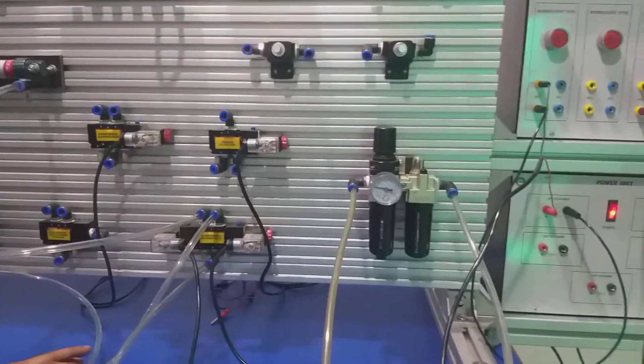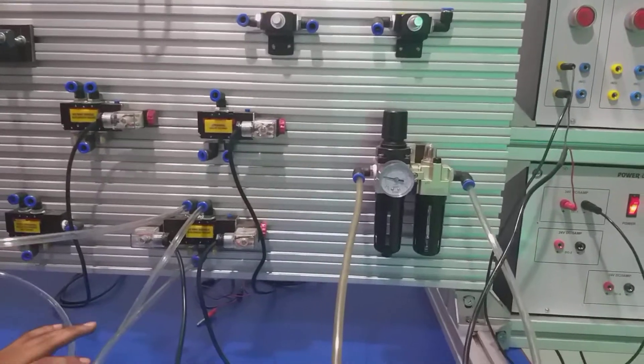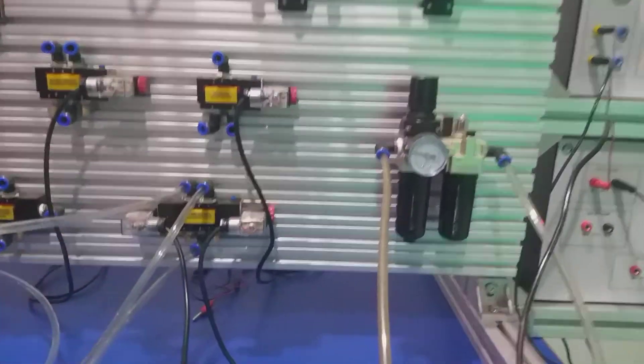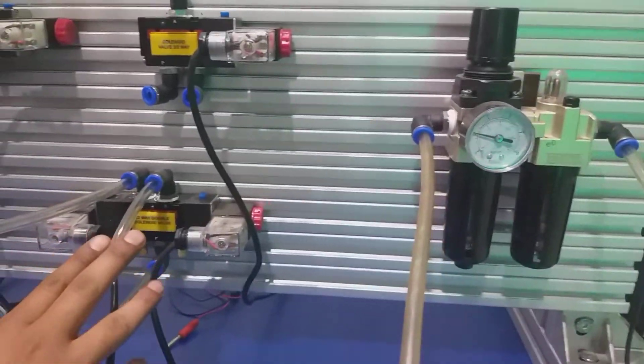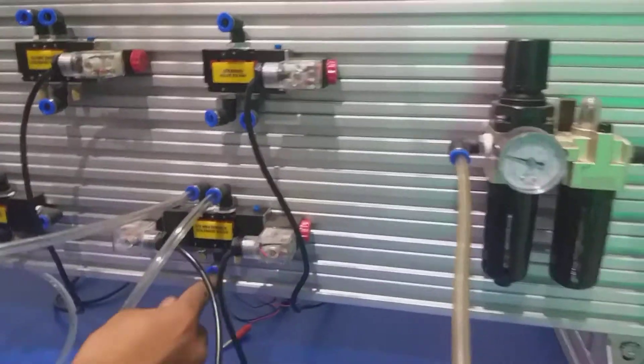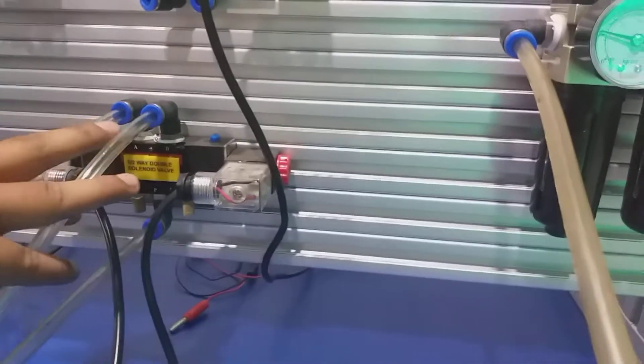The third experiment of the pneumatic terminal kit uses a 5x2 way double-solenoid valve and double-acting cylinder. In the 5x2 way double-solenoid valve, there is one input and two outputs, A and B.